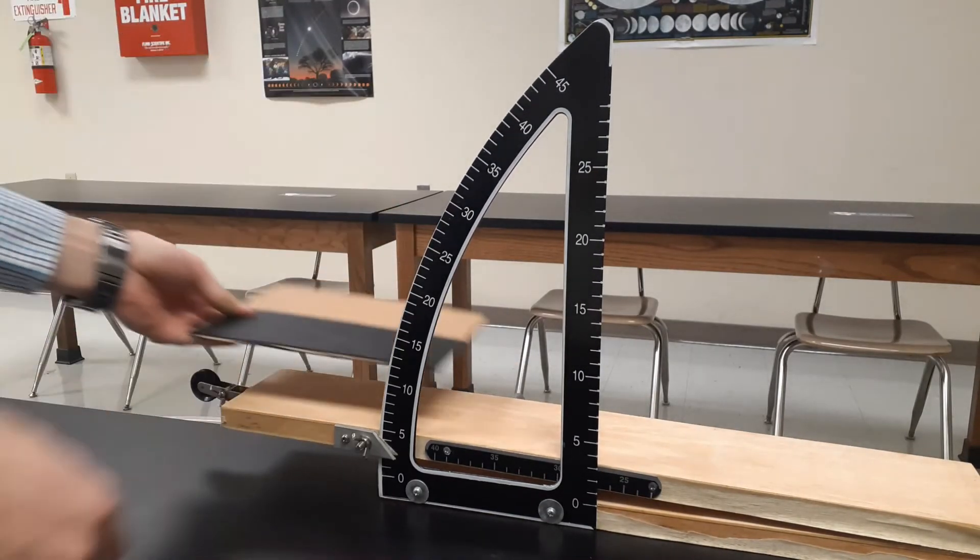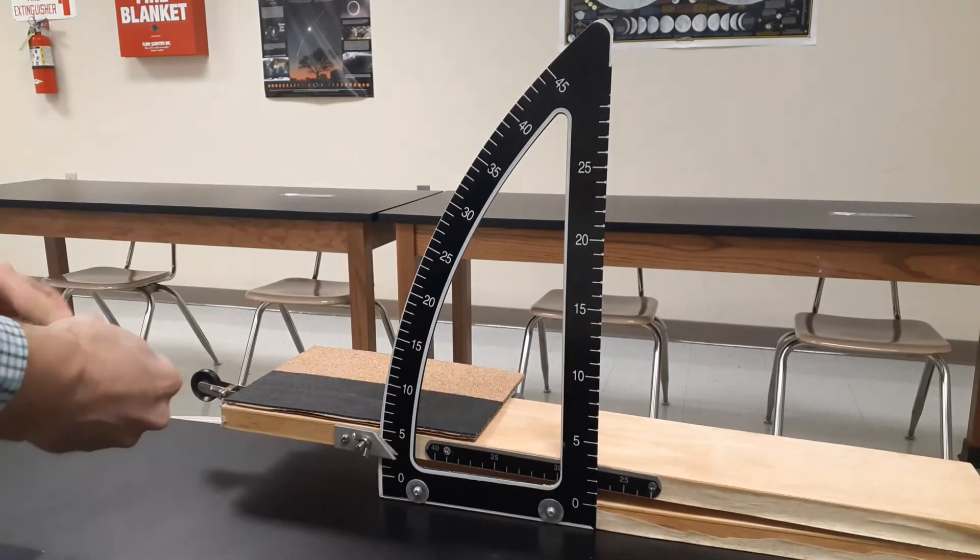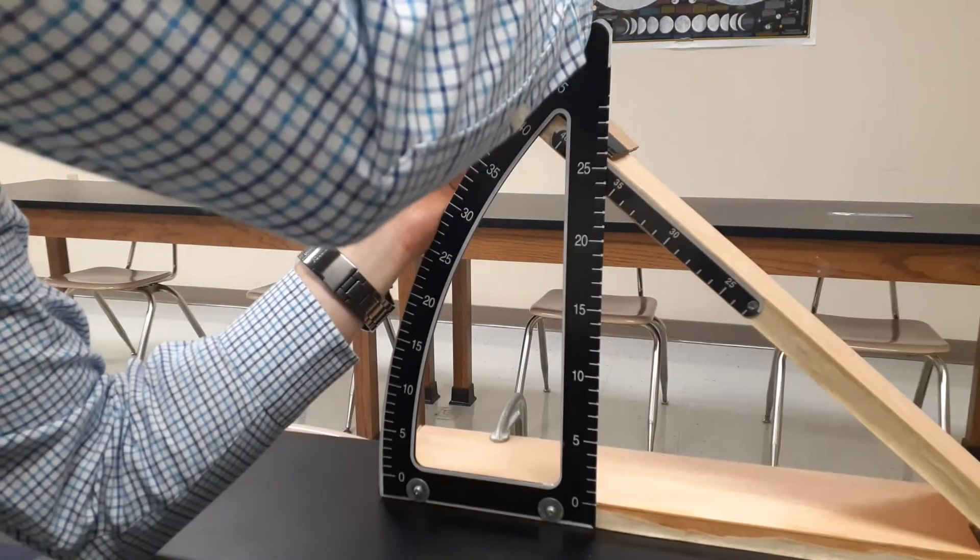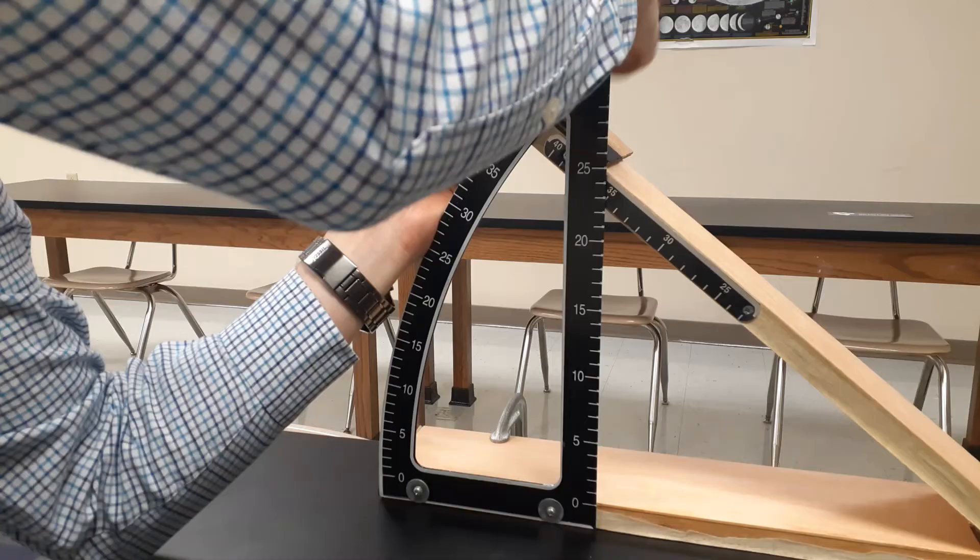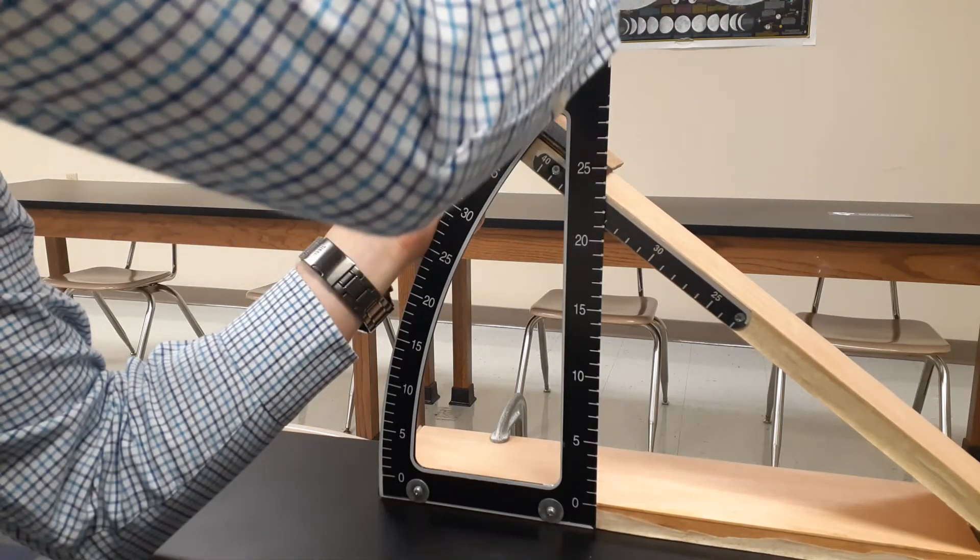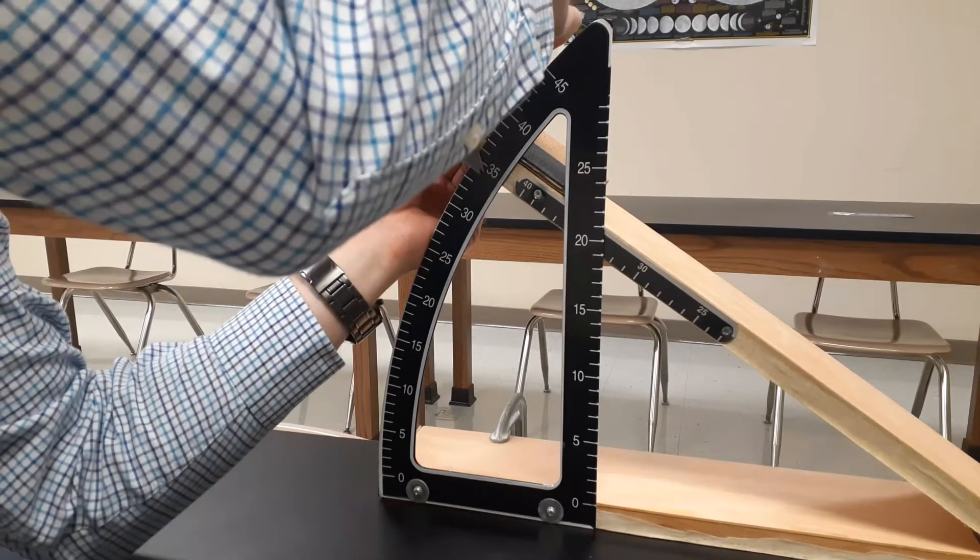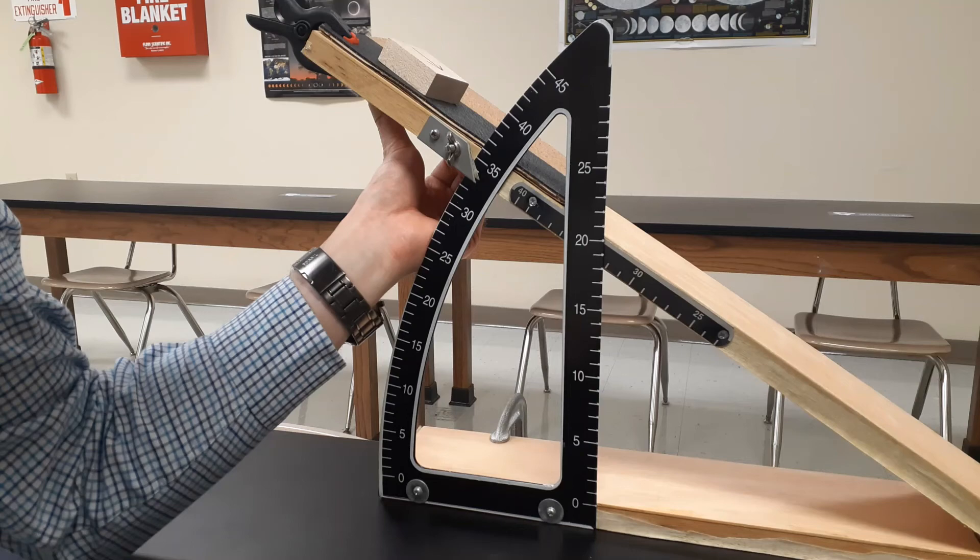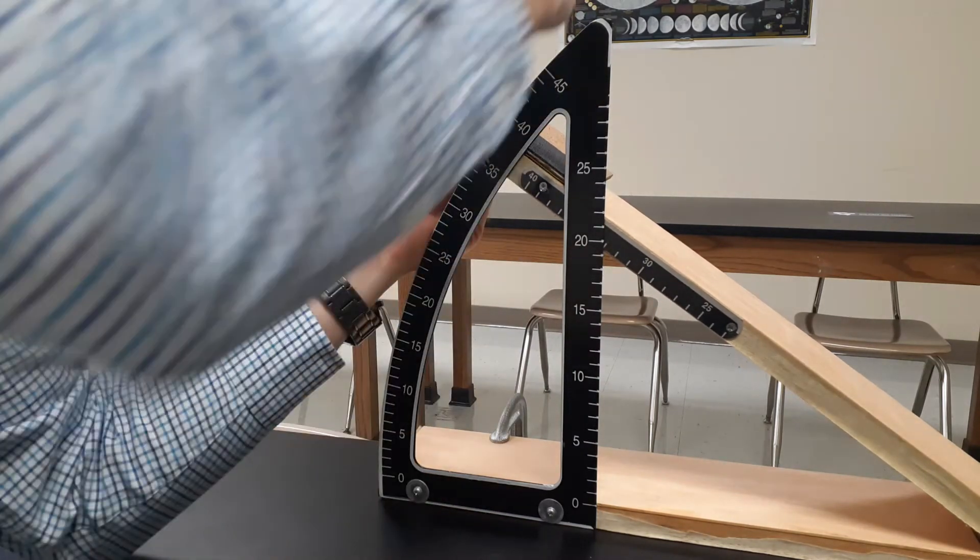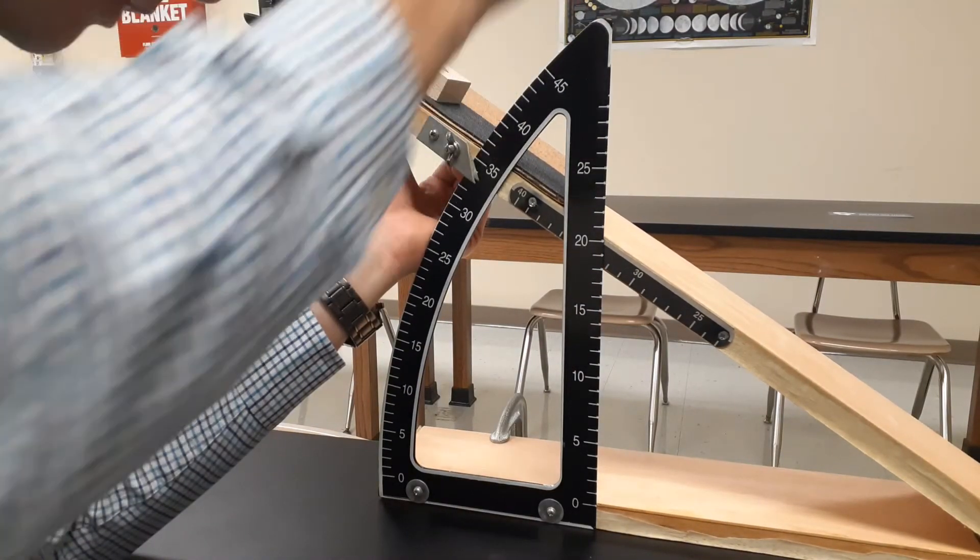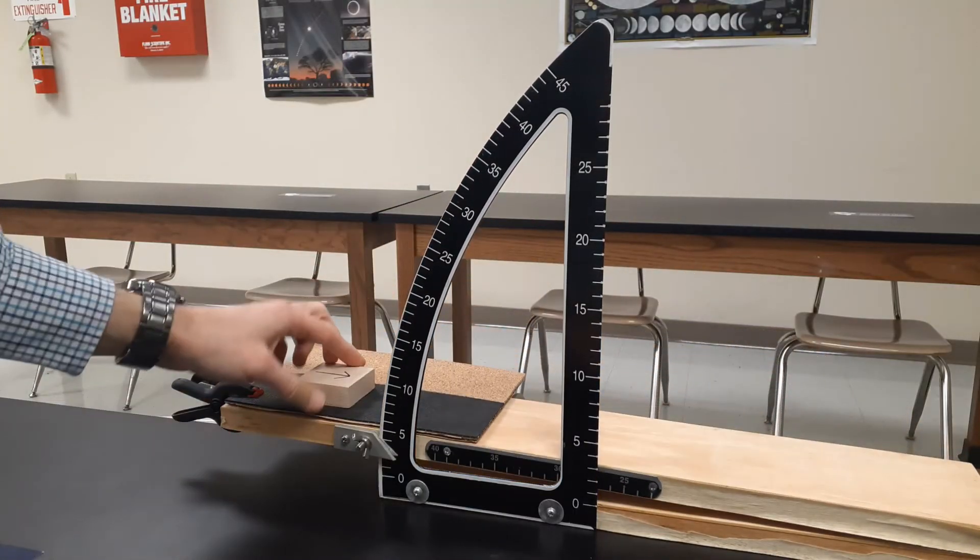Now I'm switching over to the rubber surface. Let me clamp that one in place and go ahead and start up here at a large angle. Not moving quite as much. We're getting there. We're getting close. There we go. 33 degrees. So rubber, trial number one, 33 degrees. I'm going to inch back up here just a little. That time trial two, 32 degrees. And then 33 degrees for trial three on the rubber.